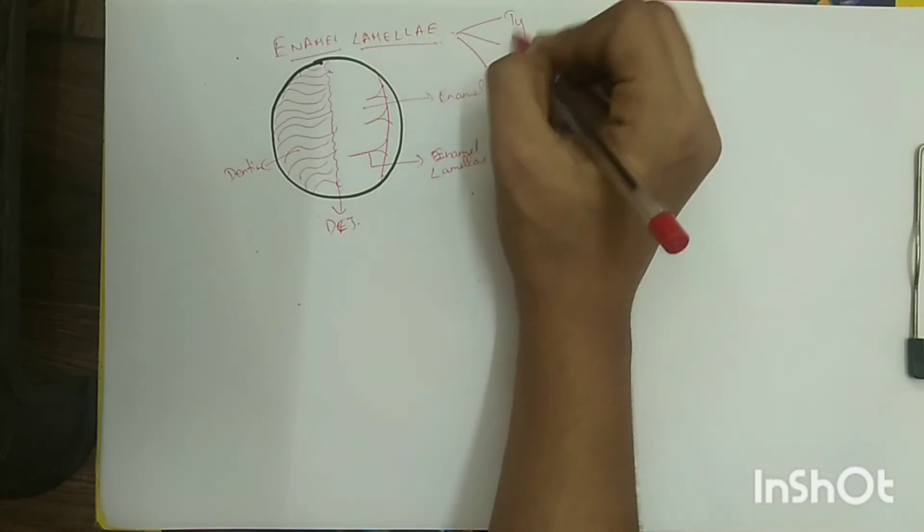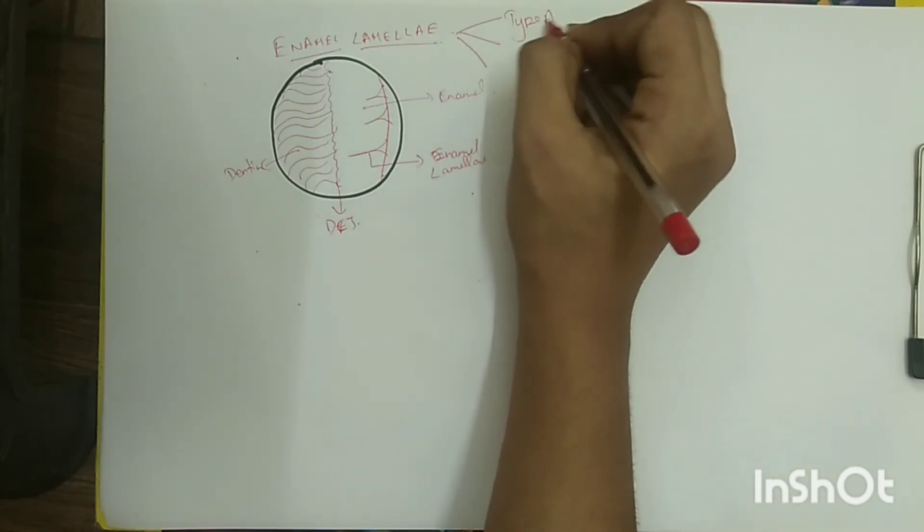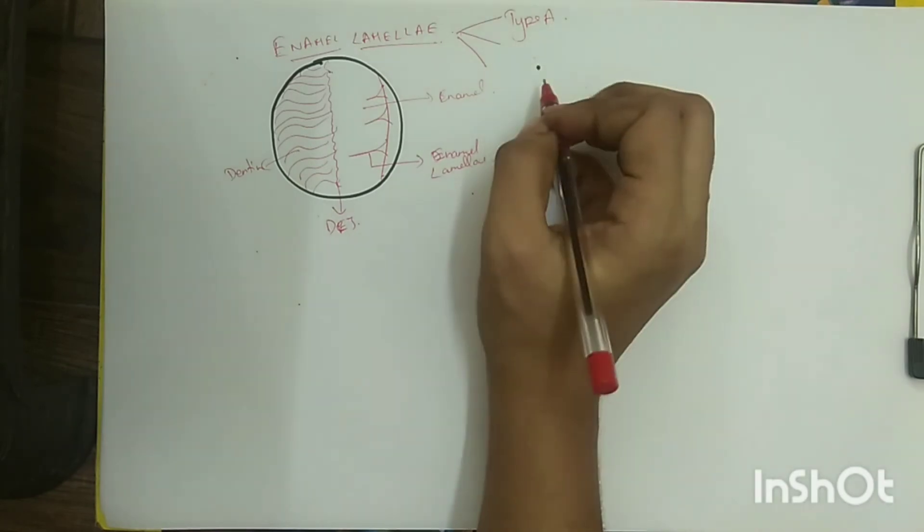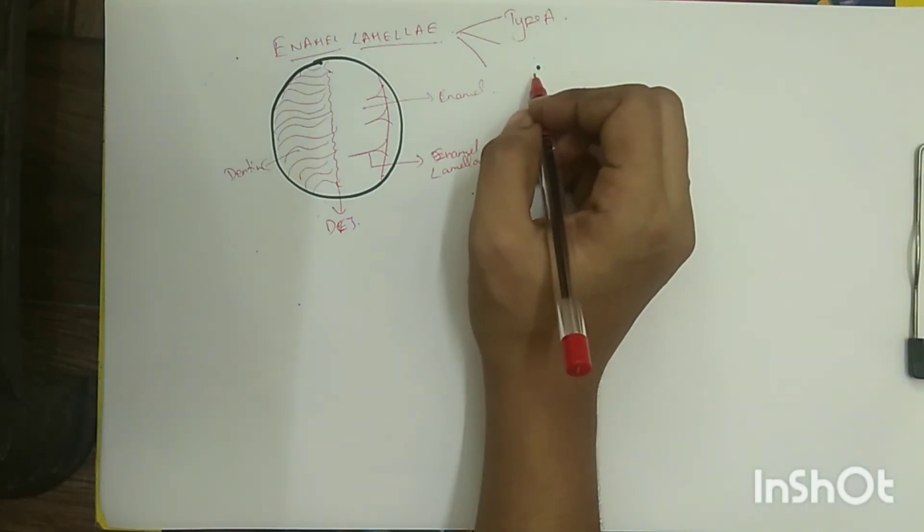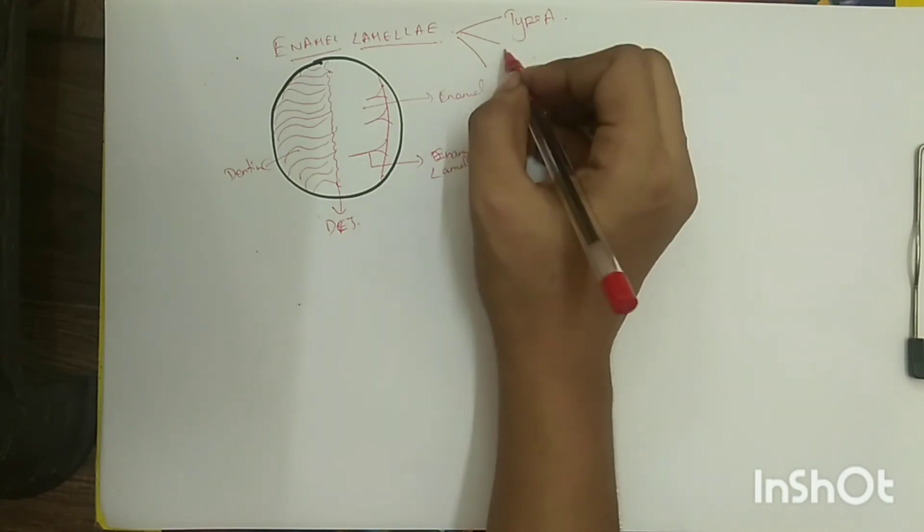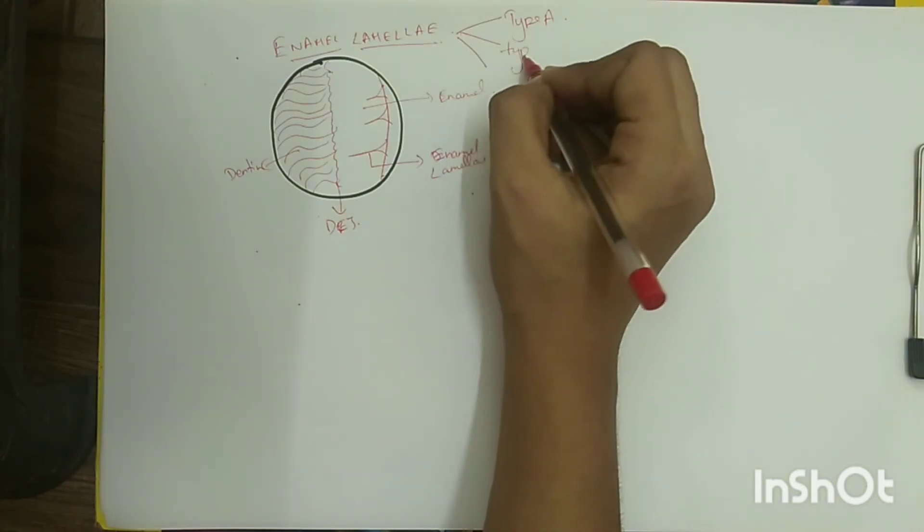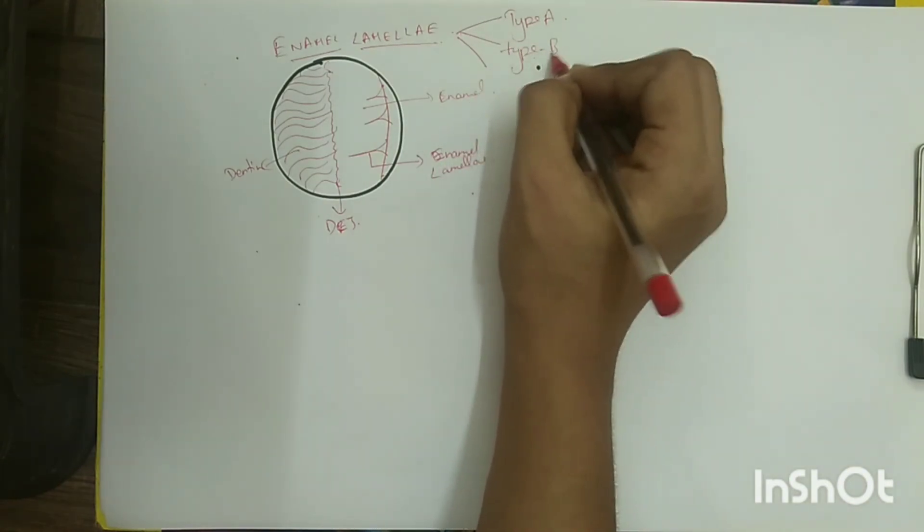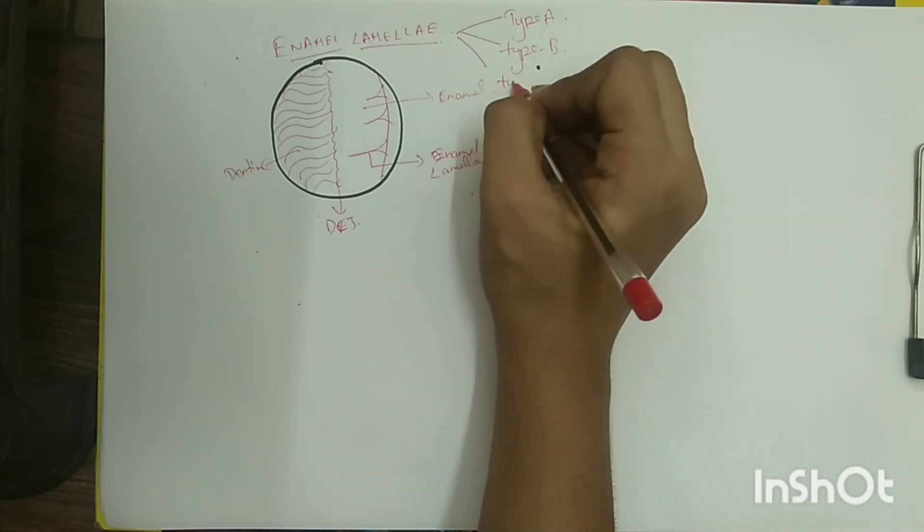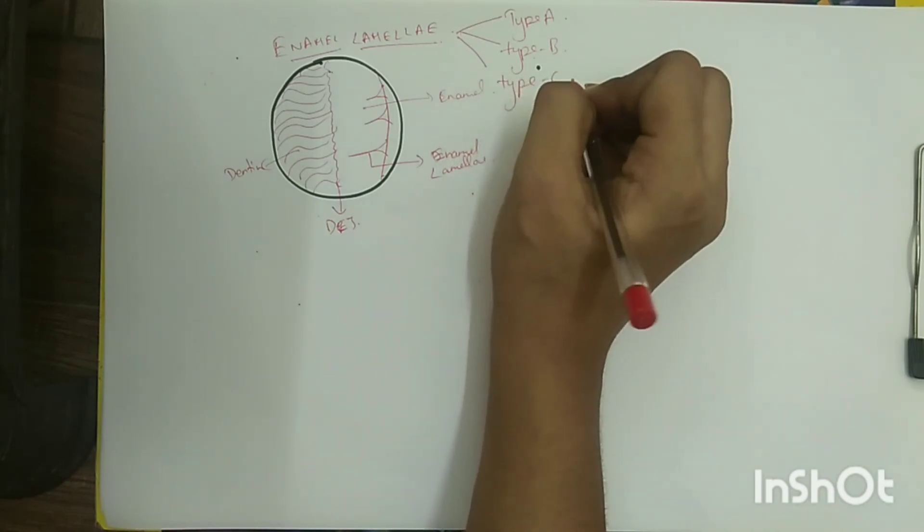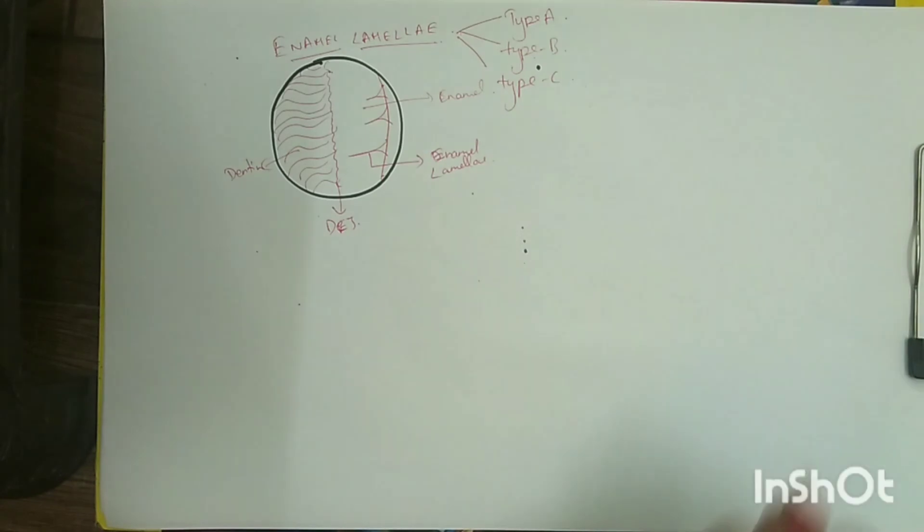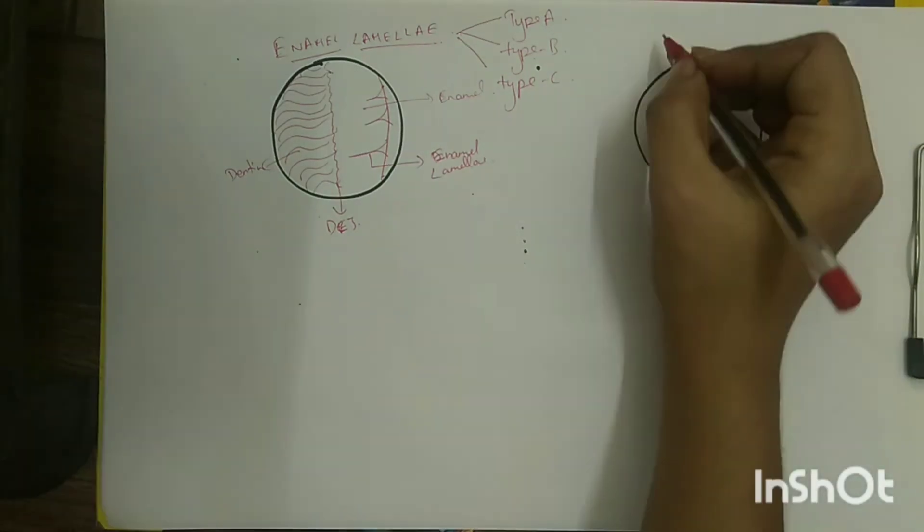Type C enamel lamellae occur in erupted teeth where the cracks are filled with organic matter from the connective tissue surrounding the teeth or the saliva. Cementum may be formed in these lamellae. Type A enamel lamellae are restricted to enamel, while type B and C may extend up to the dentin.